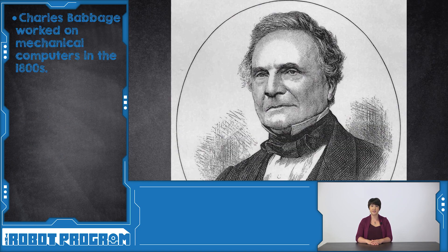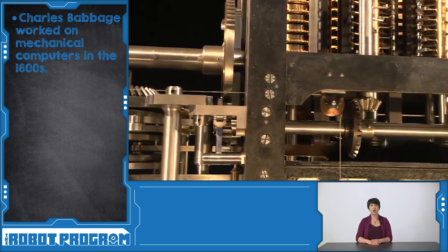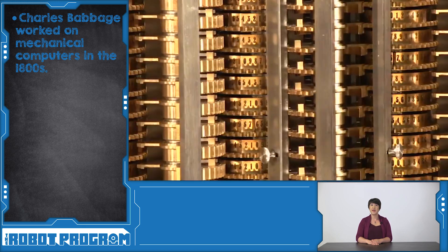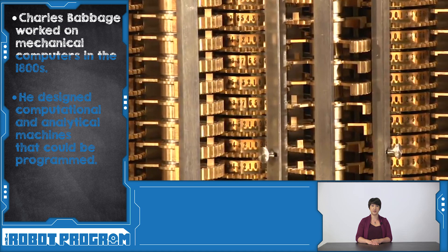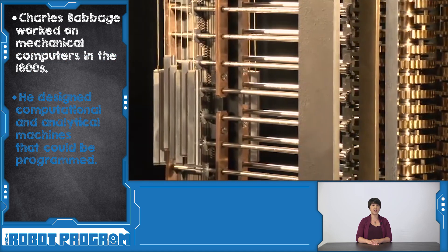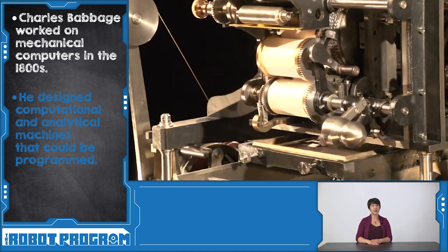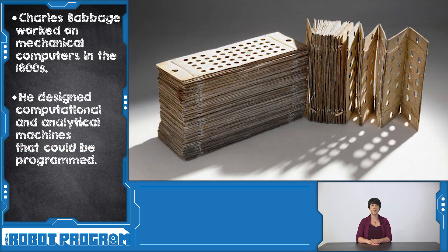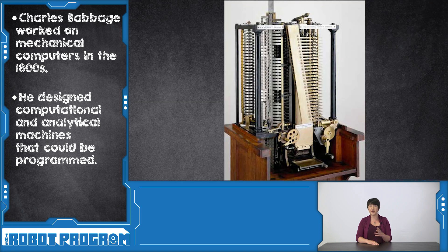In the 1800s, a man named Charles Babbage was interested in how the loom works. He used the idea of storing programs on cards to design a mechanical computer. His first design, called the difference engine, was a computational machine that could calculate complicated mathematical solutions using wheels and gears. He then took the idea of punch cards and designed the analytical engine, which also included branching logic, loops, and memory.